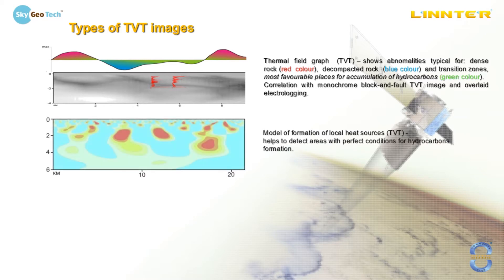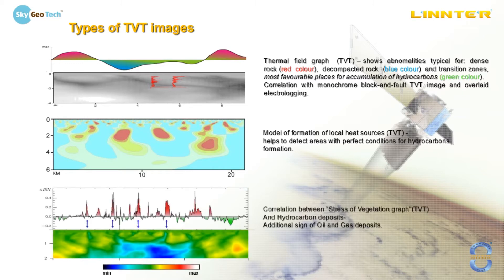We also use a model of formation of local heat sources. This image helps to detect areas with perfect conditions for hydrocarbon formation — simply saying, we can see the places where oil is cooked. And this is the stress of vegetation graph, also built with the use of TVT technology. It shows correlation with outcrops of hydrocarbons. We can see that vegetation is stressed in the spots where oil and gas come out — one more additional sign of oil and gas deposits.